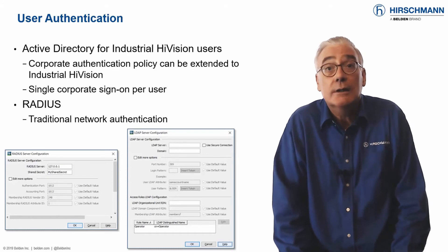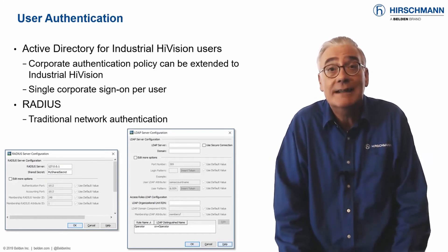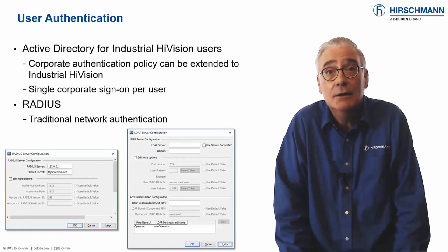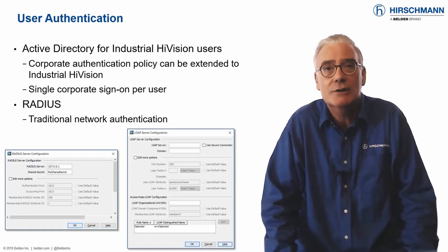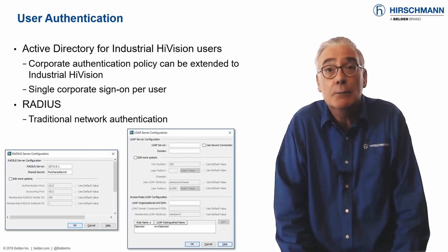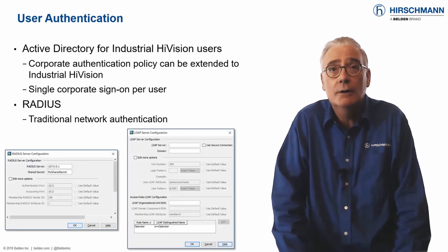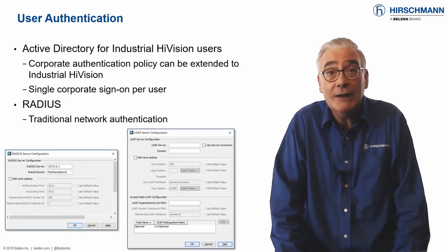An older but very widely used method of central authentication is RADIUS. Traditionally, RADIUS is used to authenticate login credentials for switches. But for consistency, we've also made RADIUS available for Industrial HiVision authentication. By offering a spectrum of techniques, Industrial HiVision can match your authentication requirements.